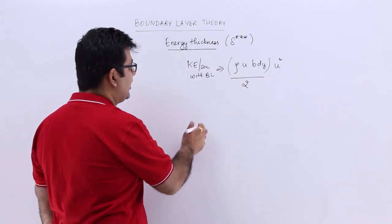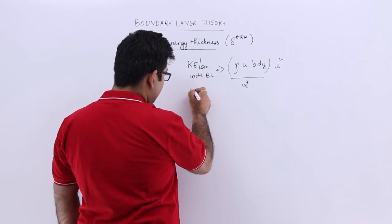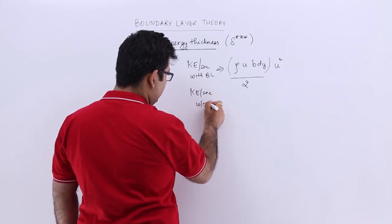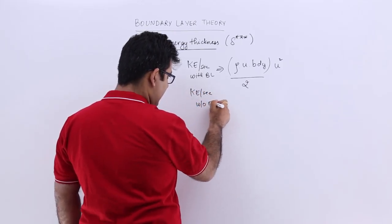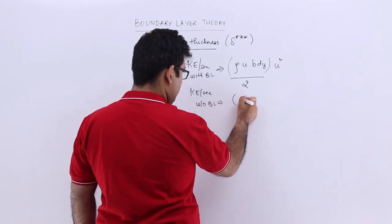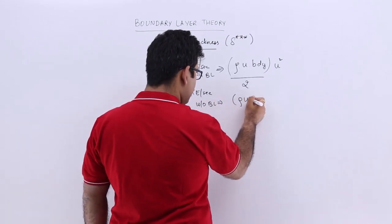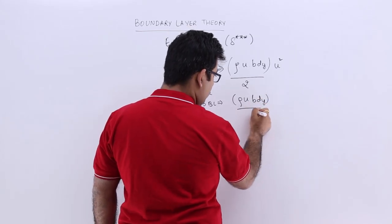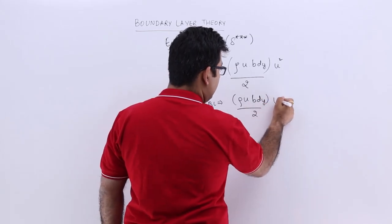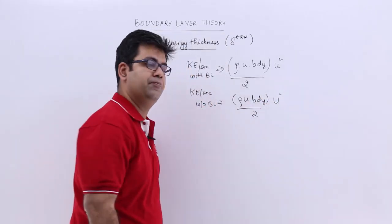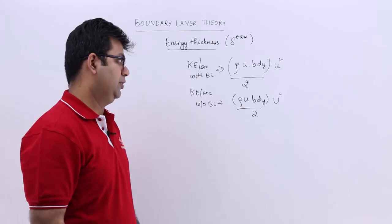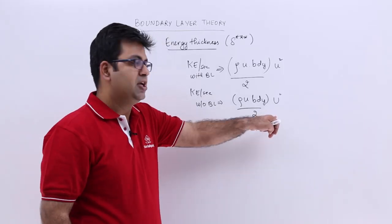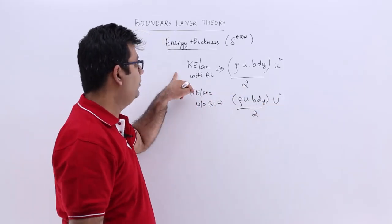Now if I take the kinetic energy per second without the boundary layer, then you will have rho into small u into b dy upon 2 into capital U squared. Capital U is the maximum velocity, so this would be higher and the boundary layer case would be lower.